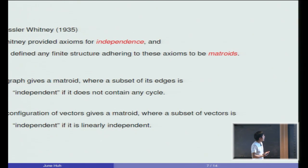So as you could guess, these predictions are in fact part of a more general prediction on more general combinatorial structures. These are combinatorial structures defined by Hassler Whitney, who provided axioms for independence and defined any finite structure adhering to these axioms to be matroids. In short, matroids are finite collection of subsets of a given finite set which you call independent, which satisfy this axiom, the so-called exchange axiom you have seen in linear algebra. For example, a graph gives a matroid where you say a subset of its edges is independent if it does not contain any cycle. This satisfies the exchange axiom. And a configuration of vectors gives a matroid where you say that a subset of vectors is independent if it is linearly independent. It's a purely combinatorial notion.